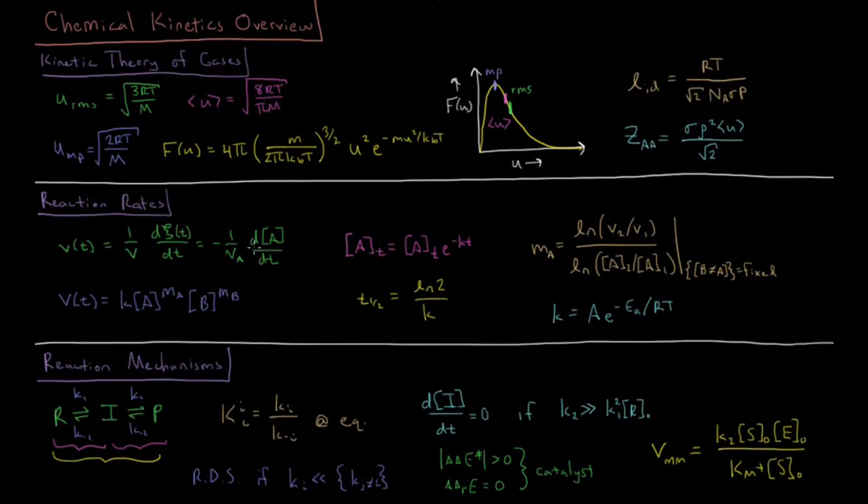We can integrate these types of rates to get the integrated rate law which is a constant times a time dependent concentration. Like for first order reactions we have that the concentration of A as a function of time is equal to its initial concentration A0 times E to the minus kT.